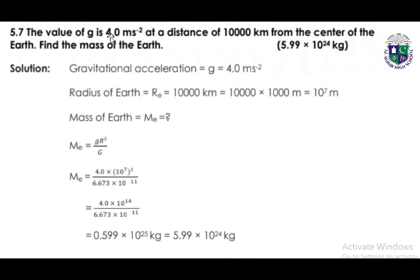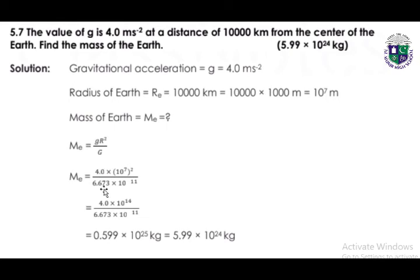Question 5.7: the value of g is 4.0 m/s², and the radius of the earth is 10,000 kilometers, which converts to 10⁷ meters. We have to find the mass of the earth. Using the formula M = g·R² / G, and substituting the values of g, R², and G (which is 6.673 × 10⁻¹¹), we calculate and obtain the mass of the earth.